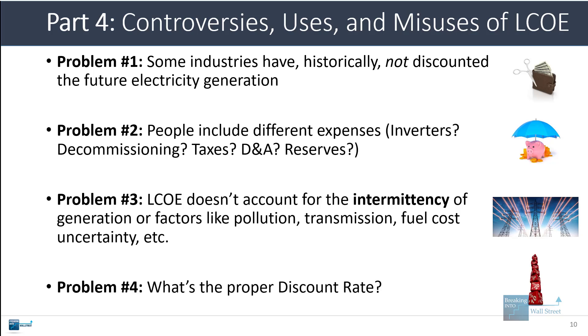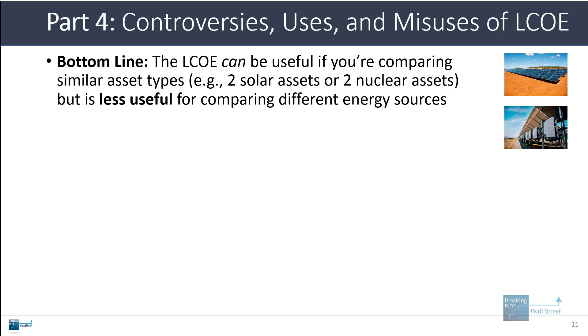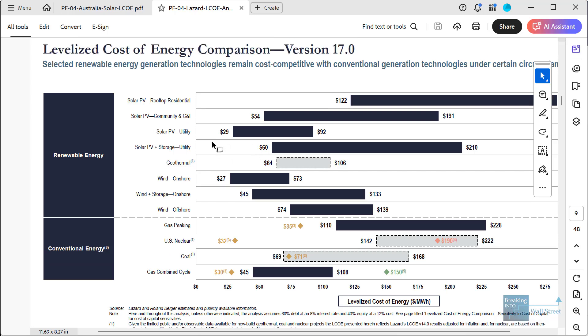People also argue about the proper discount rate — a lot of private investors will tend to use a higher discount rate, while a lot of government and public sources will tend to use a much lower discount rate because they're targeting lower returns. The bottom line is that the levelized cost of energy can be useful if you're comparing two very similar assets, such as two solar plants or two nuclear assets in the same region. But what Lazard does is a bit like comparing high-growth tech companies to manufacturing companies and saying the tech companies trade at higher multiples — of course they do, because the risk and return profile is different, and with these energy assets, the qualitative attributes are so different that it's not really an appropriate comparison.